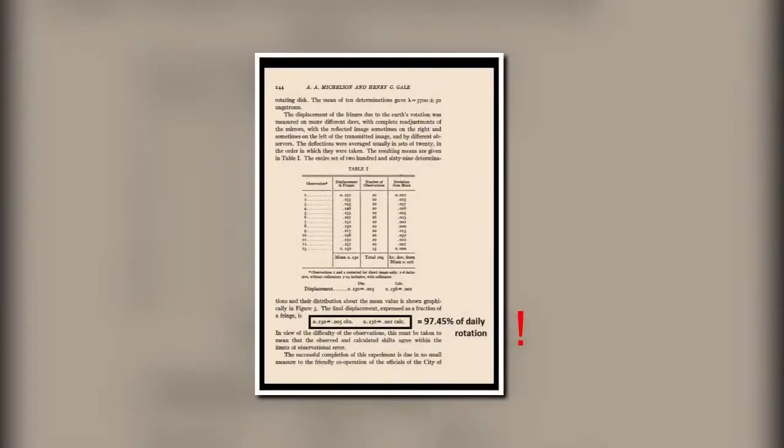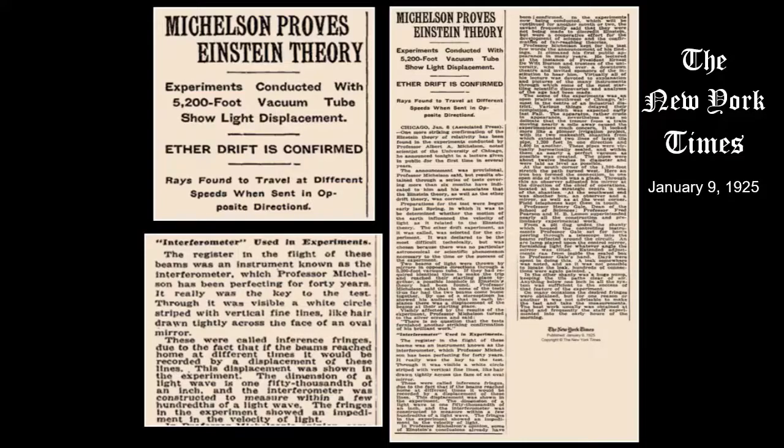Though, whereas the science community was rather stunned and silent about Michelson's 1925 results, the contemporary media stepped into the fray and gave its best shot at something that it obviously didn't understand all too well, or was determined to distort in order to preserve the reputation of Einstein and the Copernican Universe. In the January 9, 1925 edition of the New York Times, a lengthy article on Michelson's 1925 experiment appeared. It admitted that Michelson found positive proof for the very aether he had been looking for for 40 years. The headline of the article states, Michelson proves Einstein theory. Experiments conducted with 5,200-foot vacuum tube show light displacement. Aether drift is confirmed. Rays found to travel at different speeds when sent in opposite directions.